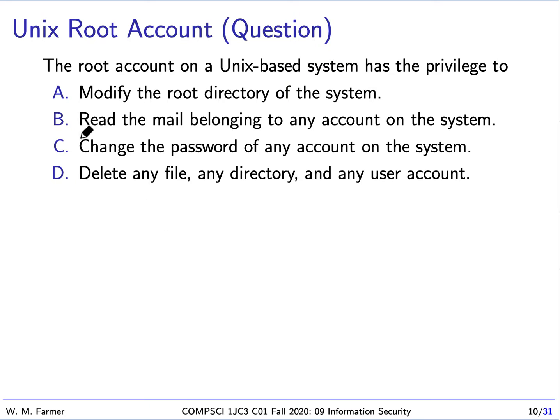The correct answer is A, B, C, and D. If you know the password to the root account on a Unix-based system, you can log into the root account and at that moment you are all powerful. You can do anything anyone could be authorized to do on that system, including reading other people's mail and very importantly changing the password. So if somehow you learn the password of the root account, you could log in as root, change the password, and now you control that machine. This is an interesting security weakness of Unix-based systems — one account is all powerful.